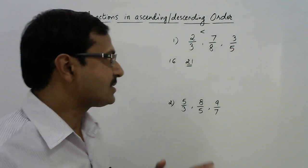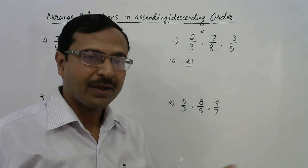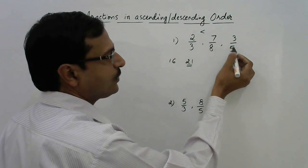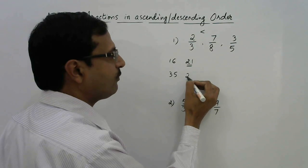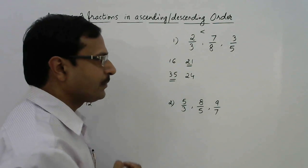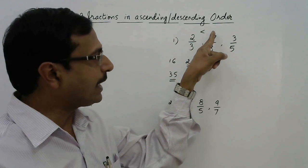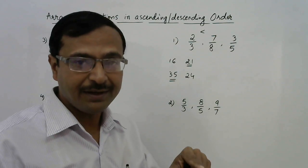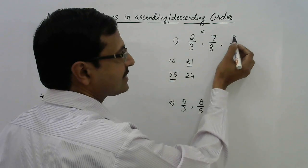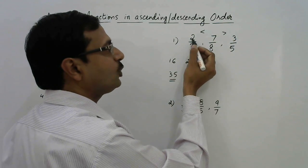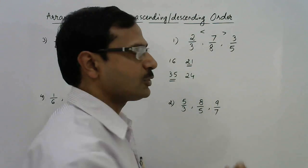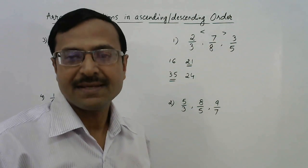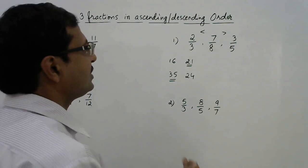Now compare either the first or second fraction with the third. Comparing 7/8 and 3/5: 7 × 5 = 35 and 3 × 8 = 24. Since 35 is greater and comes from multiplying numerator 7 with denominator 5, 7/8 is again greater. So 7/8 is greater than both 2/3 and 3/5 — giving us the result that 7/8 is the largest fraction.